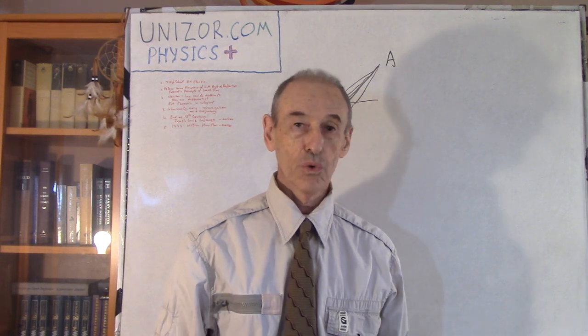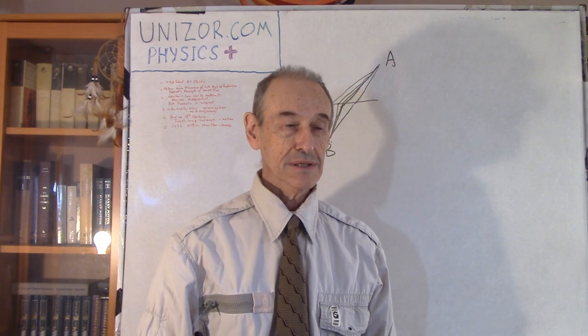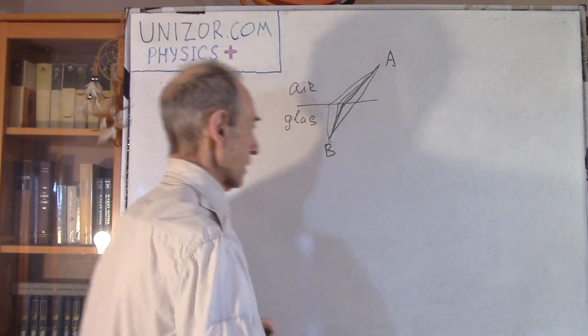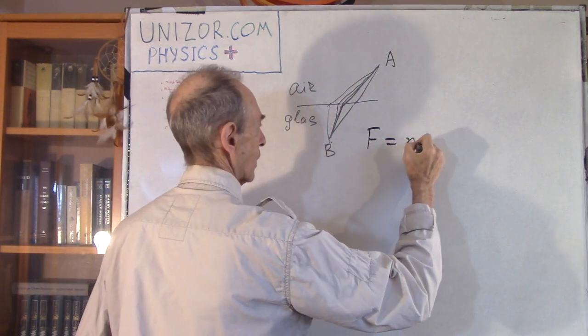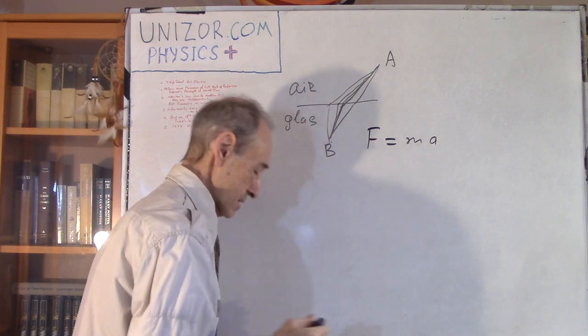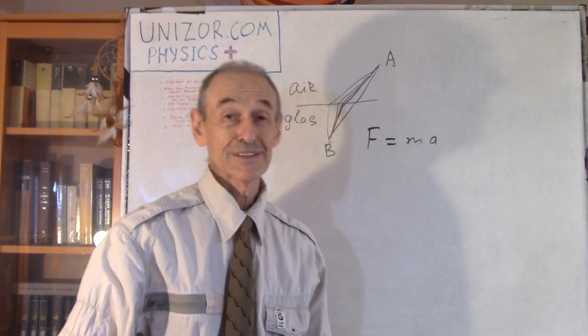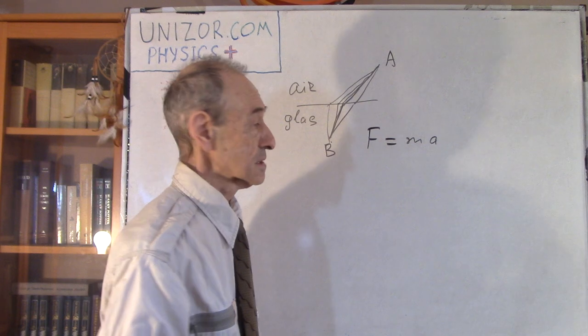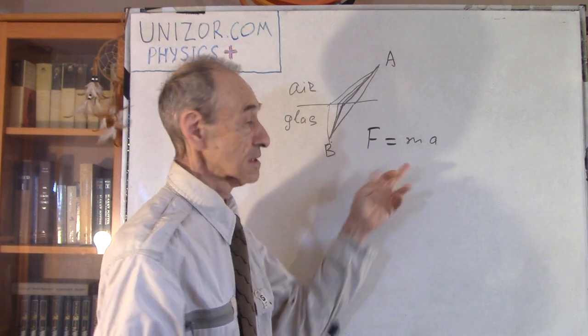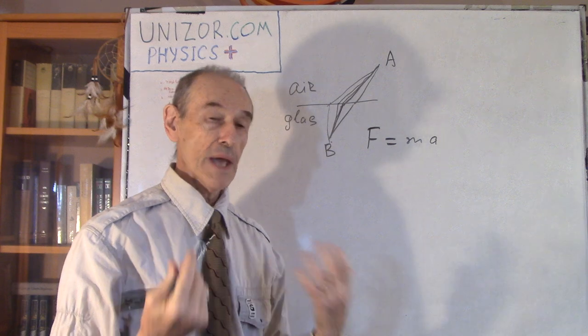Newtonian laws are basically differential. Something like, we all remember, F is equal to ma. A is acceleration, which is the second derivative of distance. So this is the differential equation, basically.